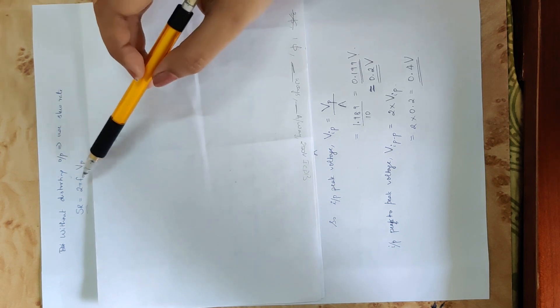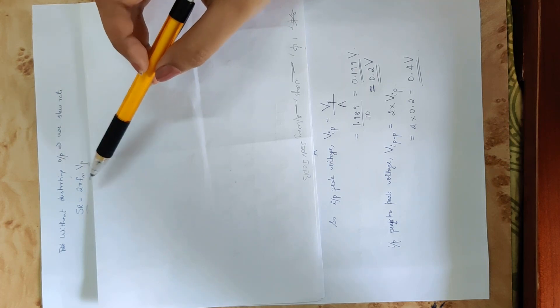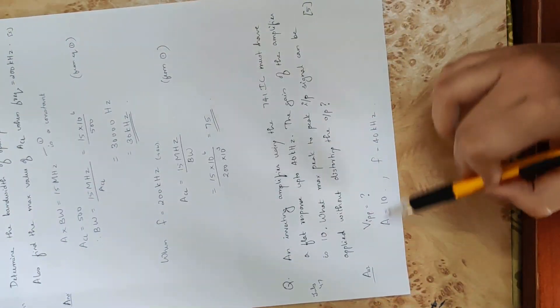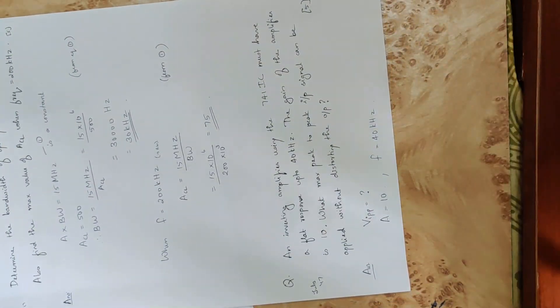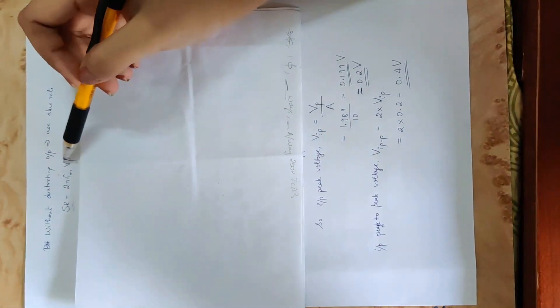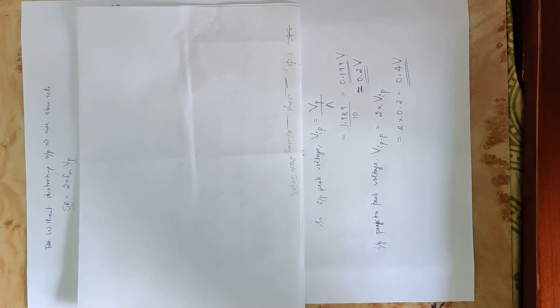We need to find the frequency and the gain. The question asks for the maximum peak-to-peak input voltage. Vp is the output peak voltage. We will use the gain and the input peak to find it.